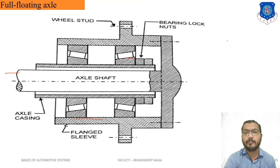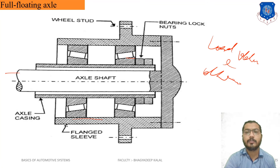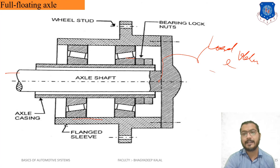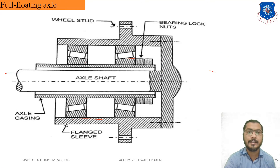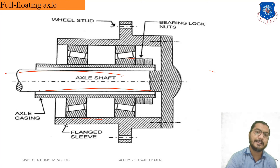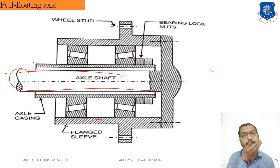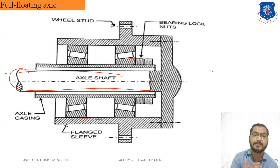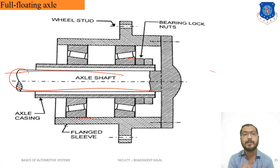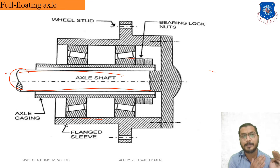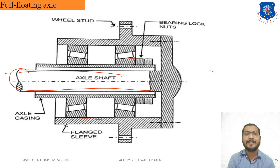Because the axle and wheel hub are connected in parallel, the weight of the vehicle and other loads come to the wheel through the rear axle casing, not through the rear axle shaft. The axle shaft only takes driving torque because two tapered bearings are used between the flange sleeve and axle casing — this is different from the semi-floating axle.